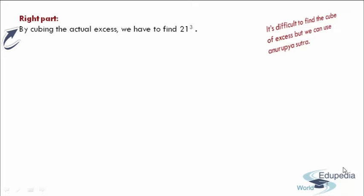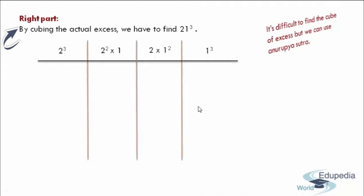Friends, I hope you remember using Anurupia Sutra in finding the cube of two-digit numbers. We have seen many examples of how to use this sutra. But here I am using this sutra very briefly. First, I am writing the numbers: 2 cube, 2 square into 1, 2 into 1 square, and 1 cube. After this, I am going to place some horizontal and vertical bars, and then write the answers of all these things.